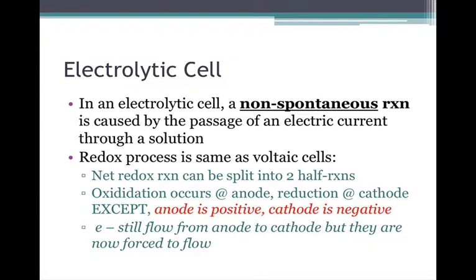So REDCAT still works here. Reduction still occurs at the cathode, but there is a difference. The anode is positive and the cathode is negative. We used cat-paws to describe the voltaic cell, but you can't use that part for the electrolytic cell. Because in this case, the cathode is going to be negative.